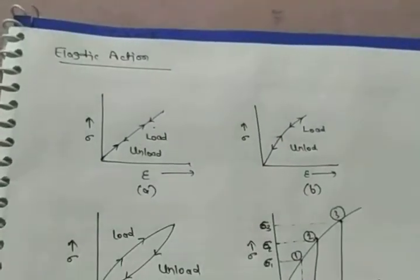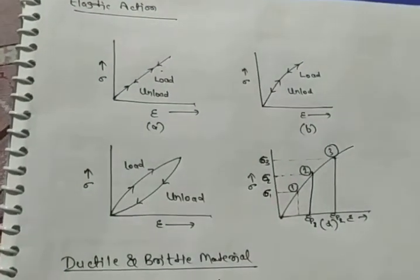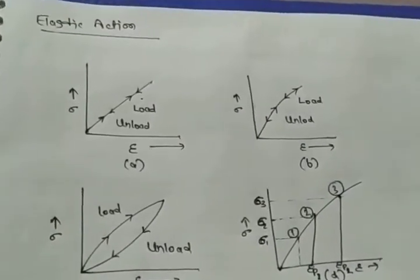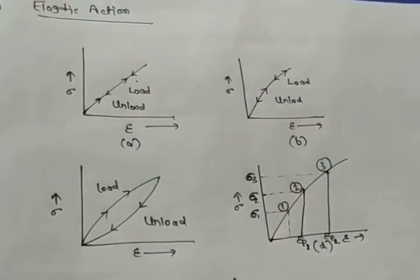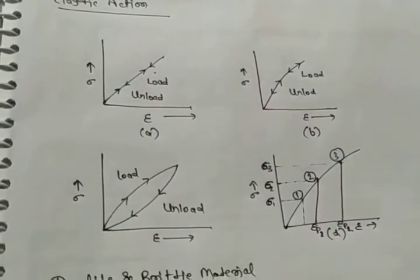Now, different types of elastic range are represented in figure A, B, C and D. Figure A represents proportionality limit, where stress is just directly proportional to the strain.